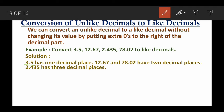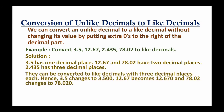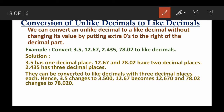In this example, 3.5 has one decimal place, 12.67 and 78.02 have two decimal places, and 2.435 has three decimal places. We check the maximum number of decimal places among all the numbers — that is three, from 2.435. So we convert each number to three decimal places by adding zeros to the right side. Therefore, 3.5 becomes 3.500.